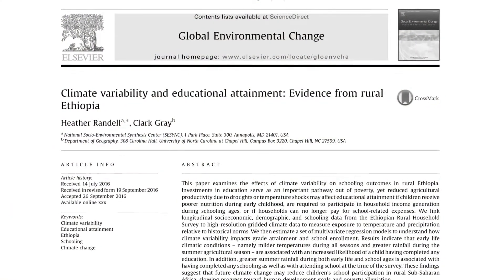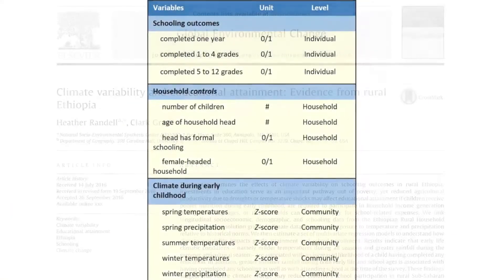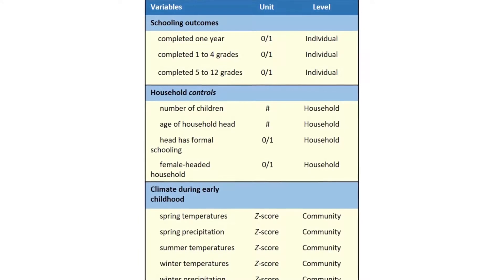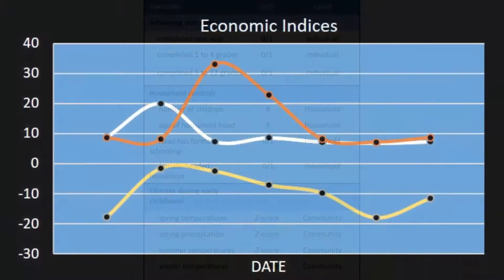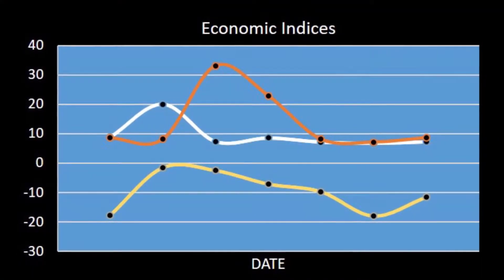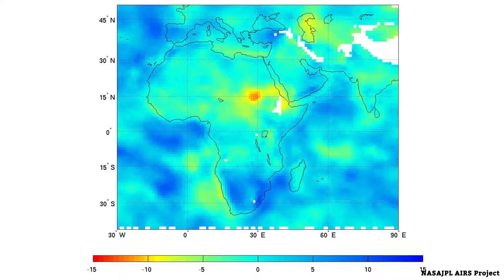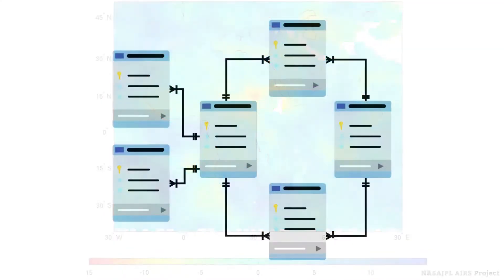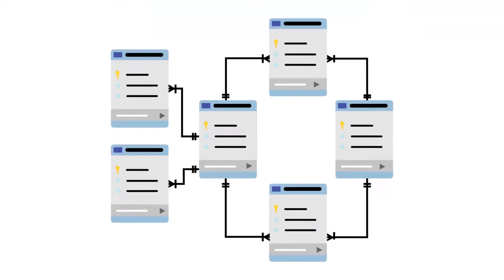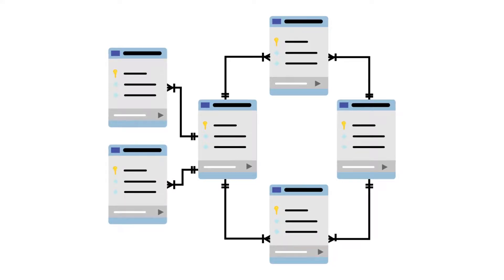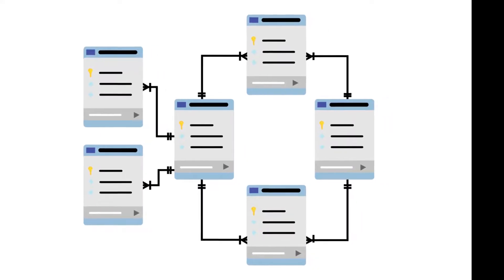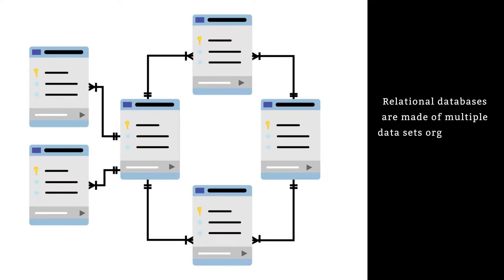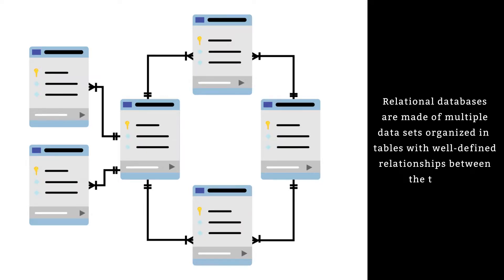Their data ranged from economic indicators to demographic variables to characteristics of behavior, as well as climatic measures in graded form. While heterogeneous, the various datasets had one variable in common — household location — so it was fairly straightforward to build a relational database. Their data were all quantitative, which is not always the case for many socio-environmental problems.